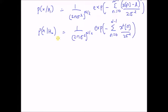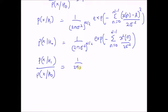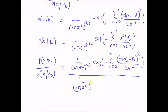Once we have these two probabilistic models, we can set up the likelihood ratio test: probability of x given H1 over probability of x given H0. This ratio equals (1/(2πσ²))^(N/2) times exponential of minus the sum from n=0 to N−1 of (x(n) − A)² divided by 2σ², over (1/(2πσ²))^(N/2) times exponential of minus the sum from n=0 to N−1 of x²(n) over 2σ².